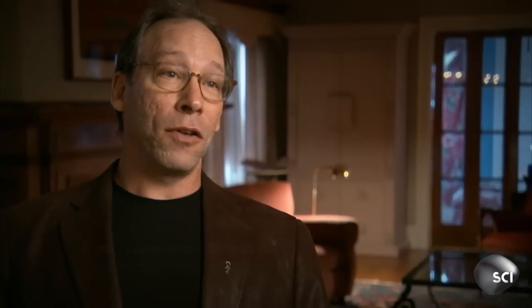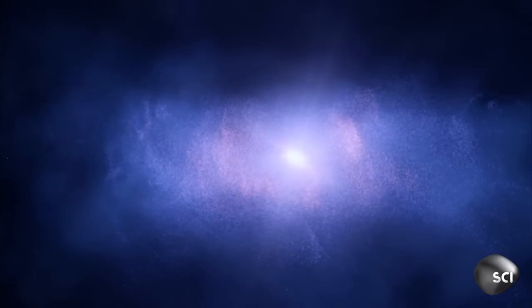Our Milky Way began not as a single baby galaxy, but many. What is now our Milky Way was once comprised of lots of small structures, irregularly shaped objects that began to merge.